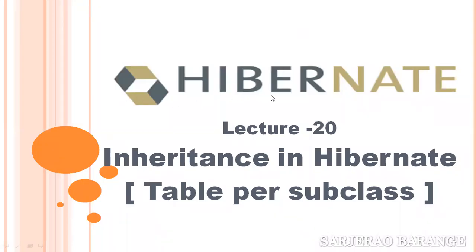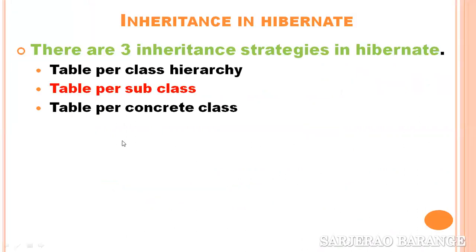Hello everyone, you are watching a video on Hibernate. This is lecture number 20 on Hibernate. In this video we will discuss inheritance in Hibernate — specifically the second strategy, that is Table per Subclass. As we know, there are three inheritance strategies in Hibernate: Table per Class Hierarchy, Table per Subclass, and Table per Concrete Class. In the previous video we discussed Table per Class Hierarchy, so now in this video we will discuss Table per Subclass.